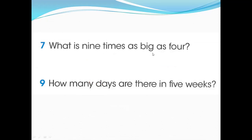Question seven: what is nine times as big as four? So we multiply nine with four. Nine multiplied by four — or four multiplied by nine — equals 36. Nine fours are 36, so the answer is 36.